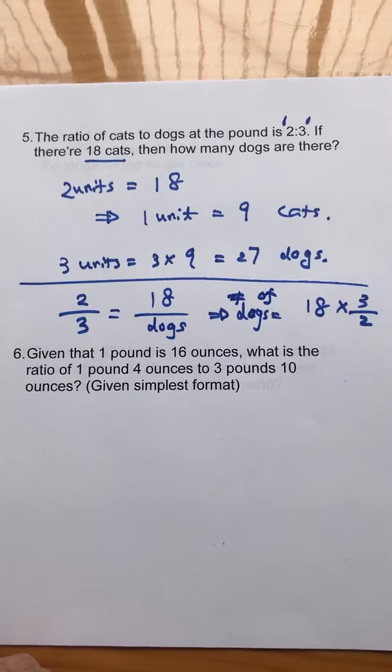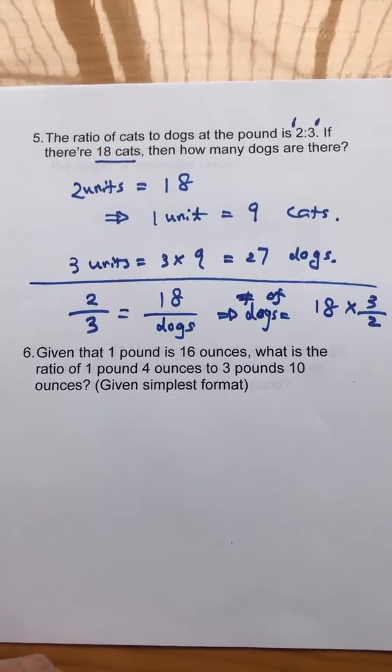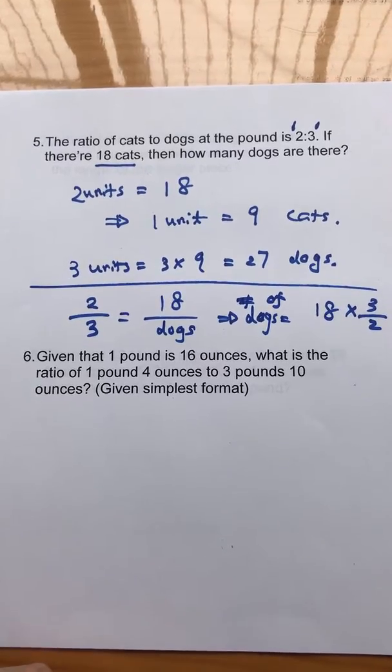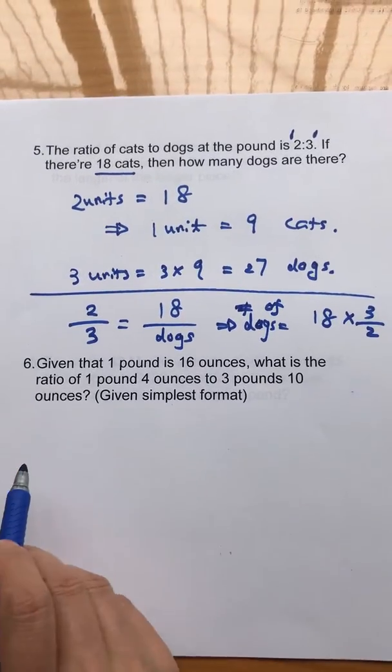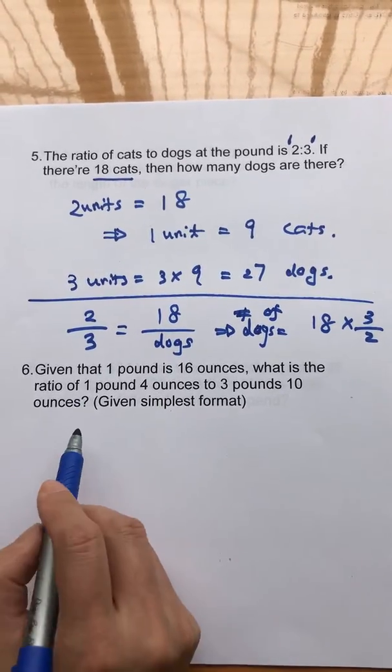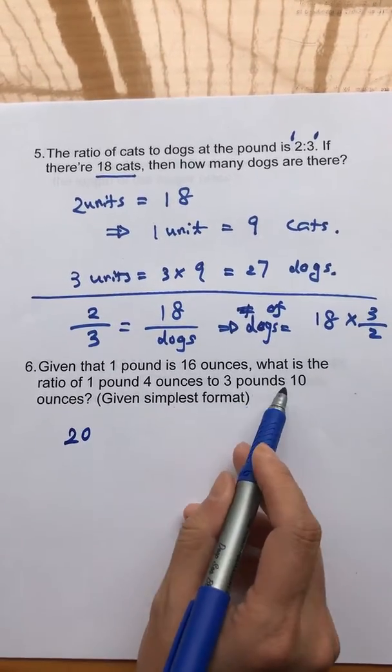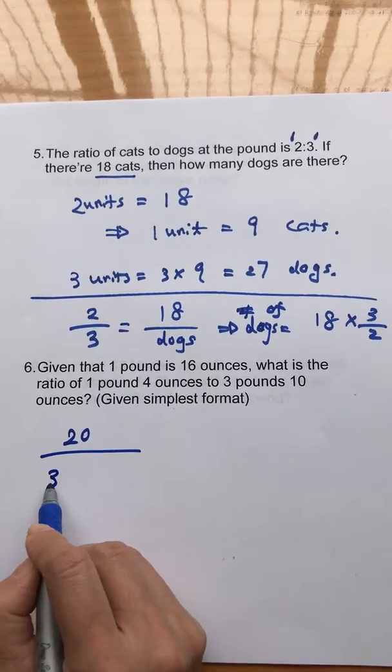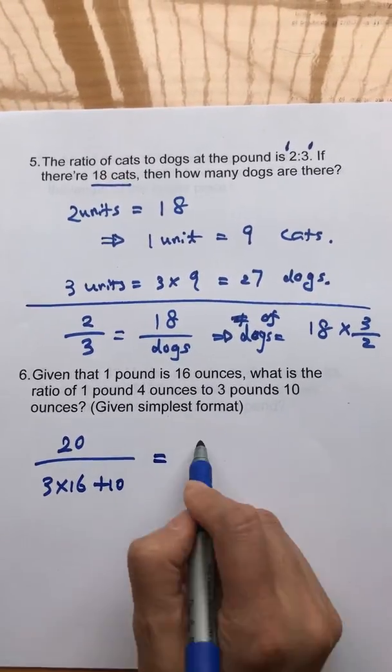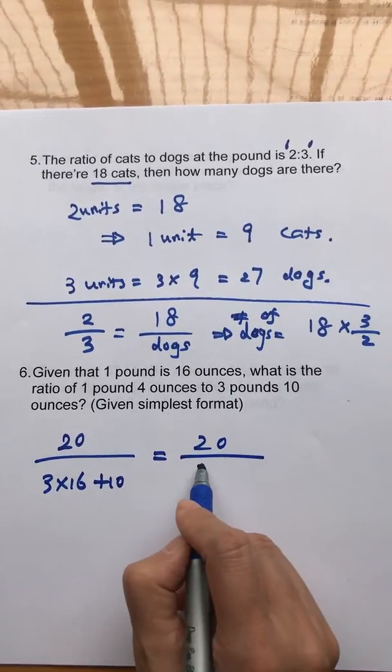Number six, given that one pound is 16 ounces, what is the ratio of one pound four ounces to three pounds 10 ounces? This is simply by converting the pounds into everything into ounces. One pound four ounces is 20 ounces. Three pound 10 ounces are three multiply 16 plus 10, so 20 over 58.